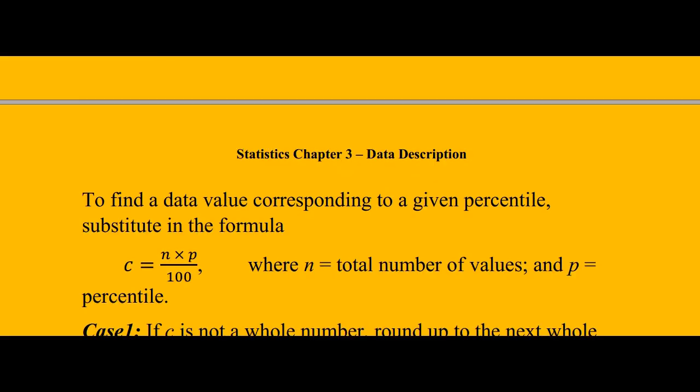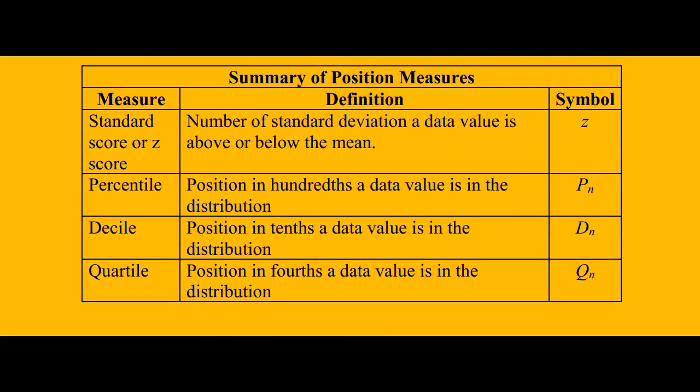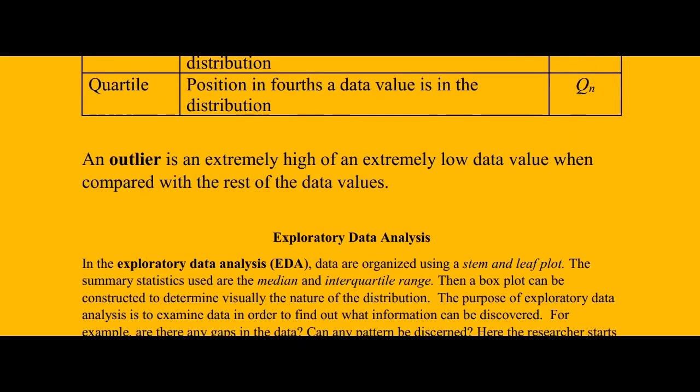In summary, z-score identifies their symbols and deciles identify their positions. Z-score is standard score and percentile has the value in hundreds, deciles in tens, quartiles in fours. Now remember that an outlier is an extremely high or extremely low data value.